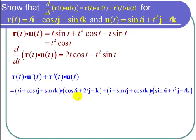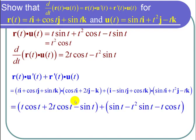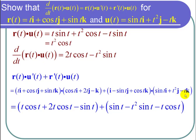Now let's take these dot products. I get t times cosine of t, plus 2t cosine t, and then plus sine of t times negative 1, or minus sine of t. The second dot product gives 1 times sine of t, or just sine of t, then minus t squared sine of t, and then plus cosine of t times negative t, or minus t cosine t.